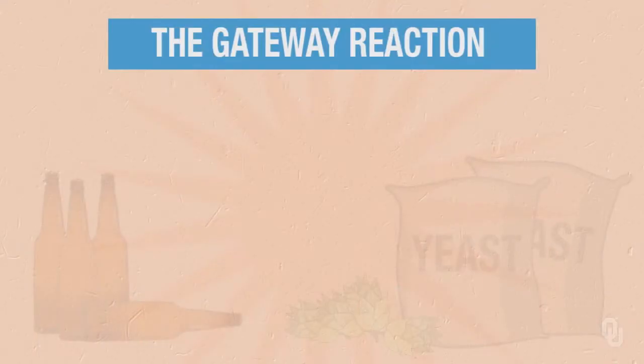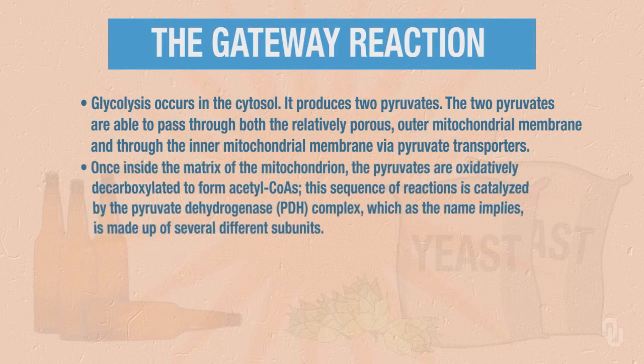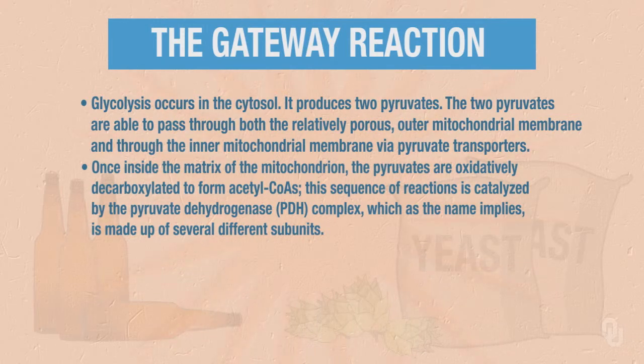Our first reaction to consider is sometimes called the gateway reaction. Glycolysis, which we discussed previously, occurs in the cytosol. It produces two pyruvates. The two pyruvates are able to pass through both the relatively porous outer mitochondrial membrane and through the inner mitochondrial membrane via pyruvate transporters. Once inside the matrix of the mitochondrion, the pyruvates are oxidatively decarboxylated to form acetyl CoAs.